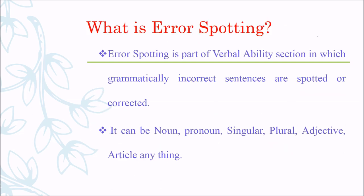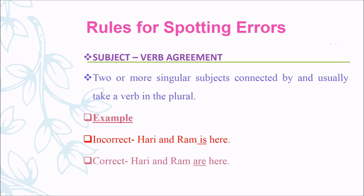Next, we are going to learn about Error Spotting. Error Spotting is part of the Verbal Ability section in which grammatically incorrect sentences are spotted or corrected. Errors can be in the noun, pronoun, singular/plural, adjective, article, or anything.